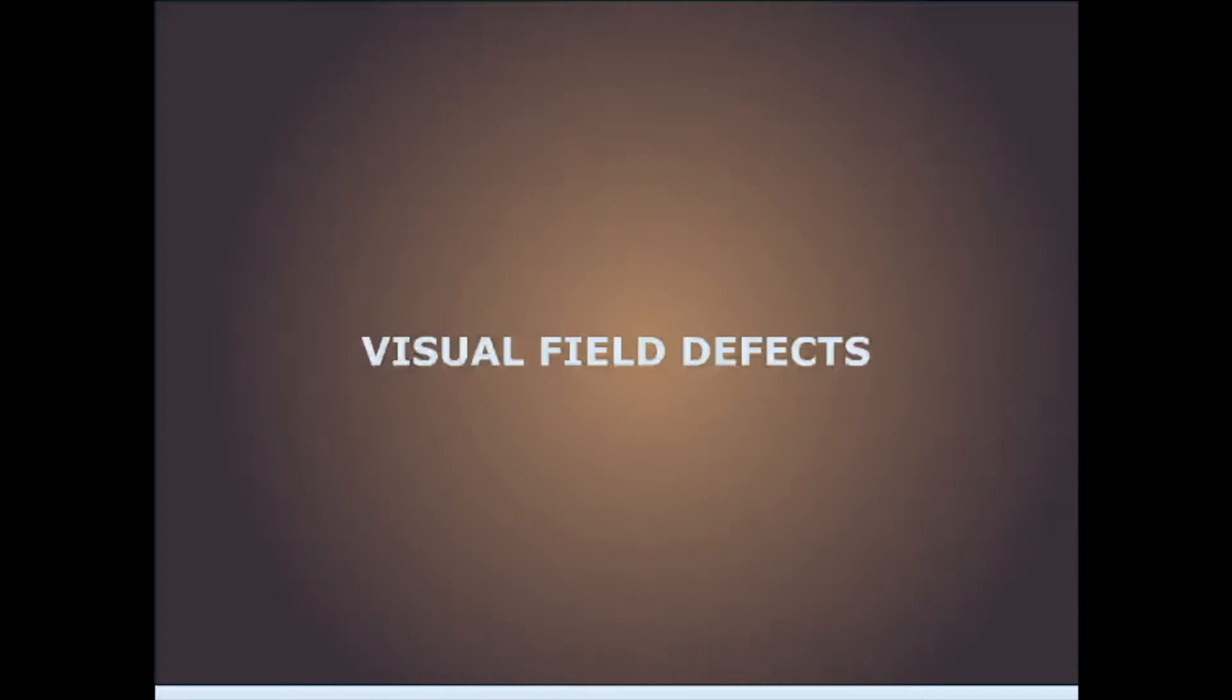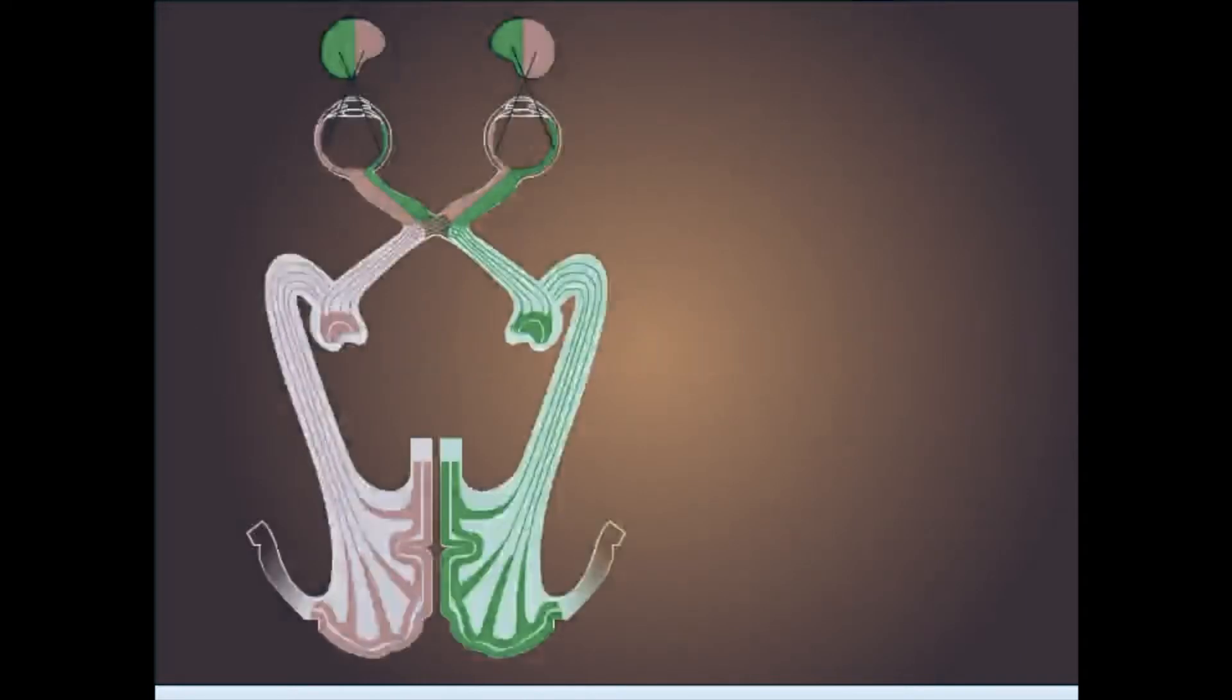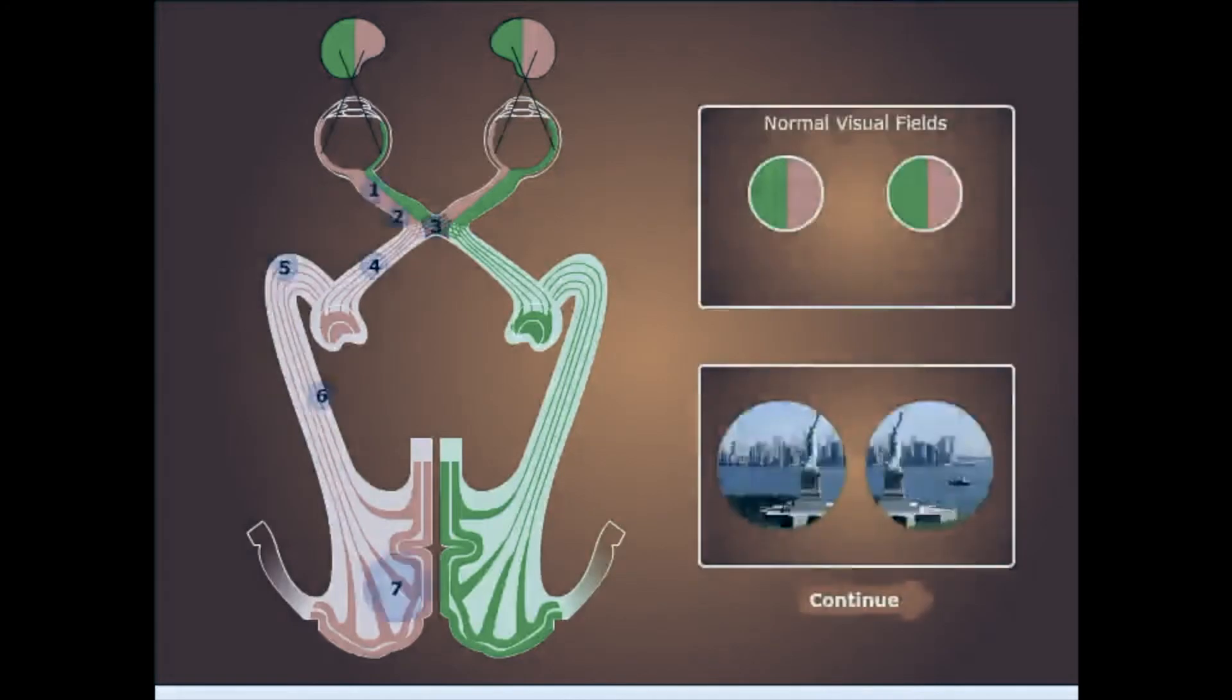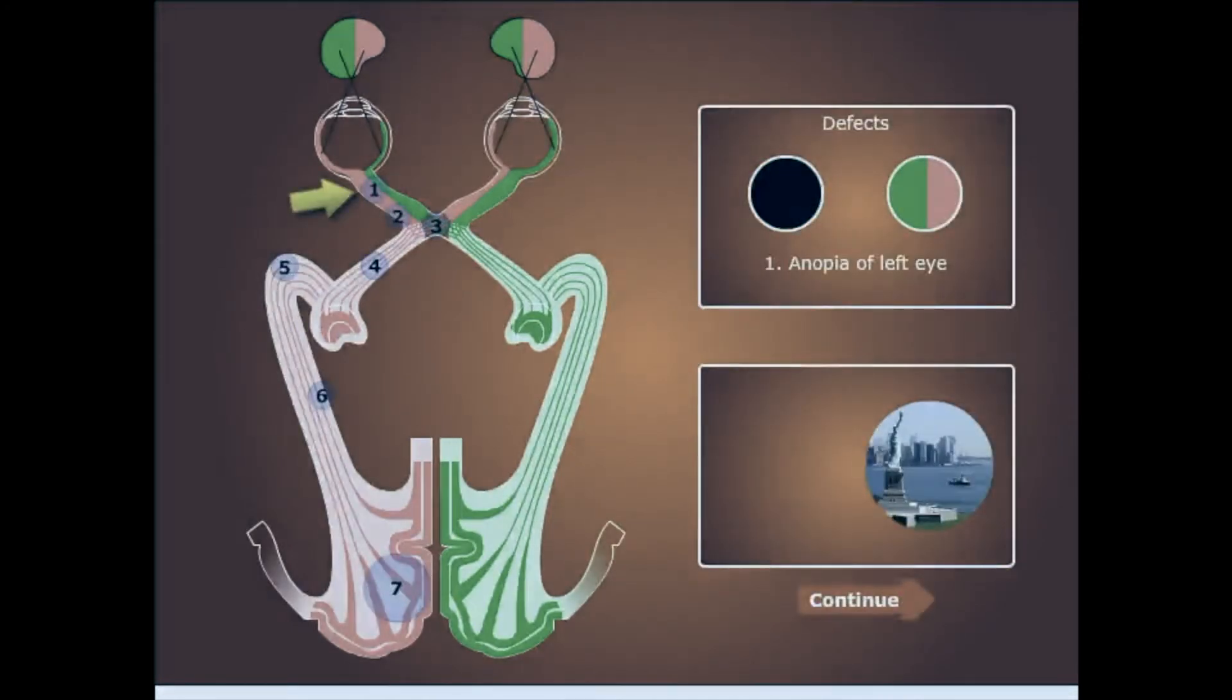Visual field defects. This image illustrates the normal visual fields. A lesion in the left optic nerve causes loss of vision, or anopia, of the left eye.